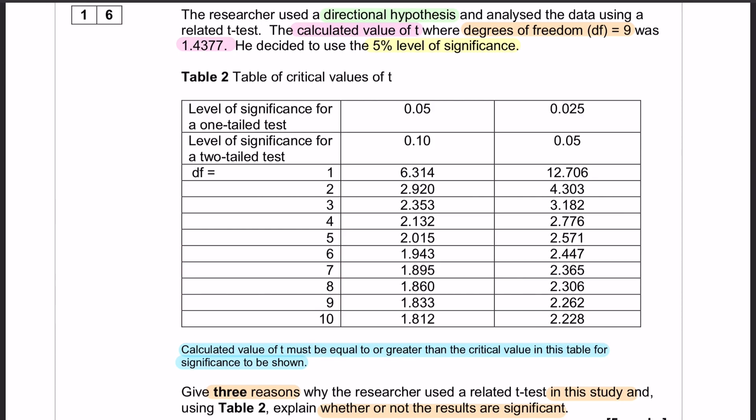I've highlighted the bits and pieces that might be useful for us. We've got a directional hypothesis, we've already got our calculated value which was 1.4377, we know that we're at the 5% level of significance, and we have degrees of freedom of nine. So straight off the bat we can say that our critical value, if our degrees of freedom is nine and we have a directional hypothesis which means we are going to be using a one-tail test at the 5% level, then we know our critical value is 1.833.